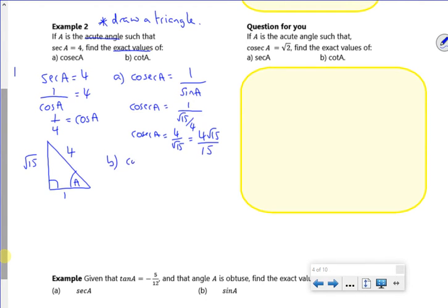Part b is cot, so I know that's 1 over tan A. So cot is the opposite over adjacent, so that's 1 over root 15 over 1. There you go, just 1 over root 15. Surd it out as root 15 over 15. There.